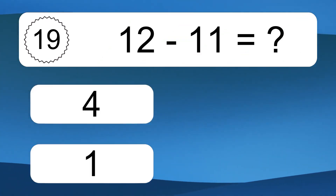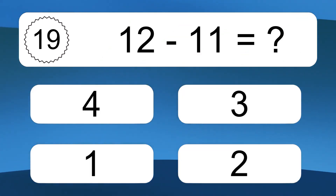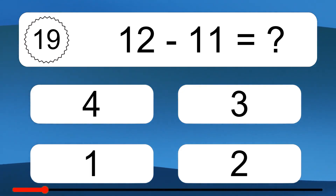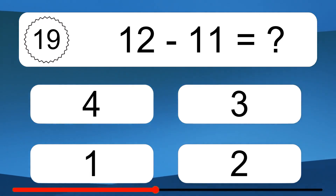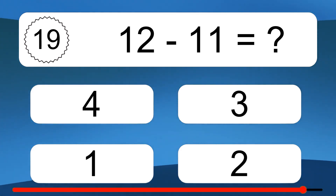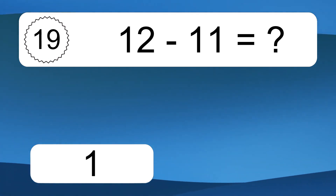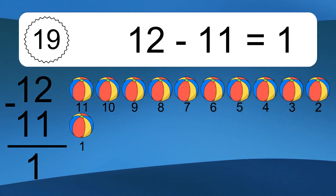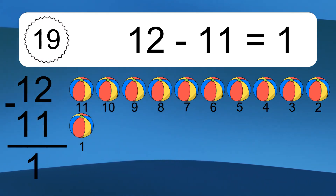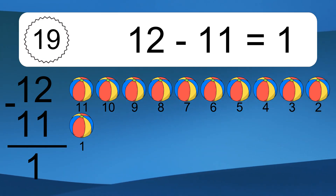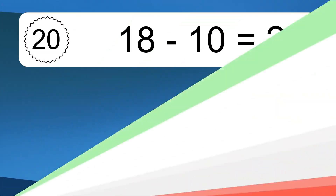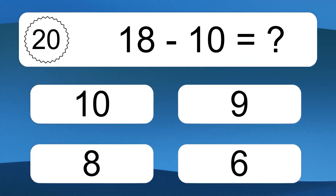12 minus 11 equals what? 12 minus 11 equals 1. Let's count it: 11, 10, 9, 8, 7, 6, 5, 4, 3, 2, 1.